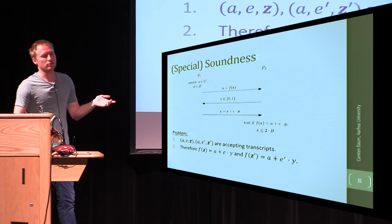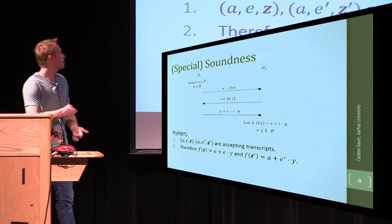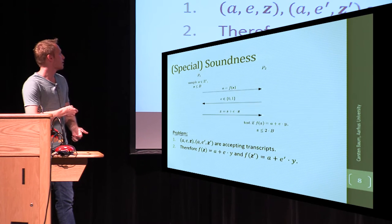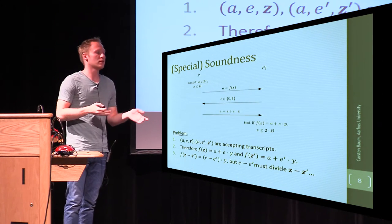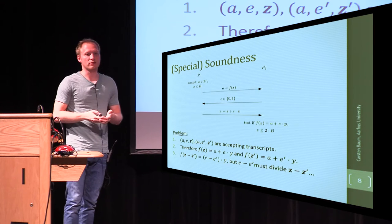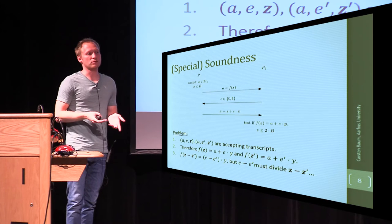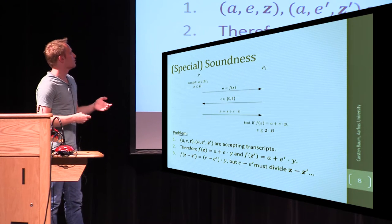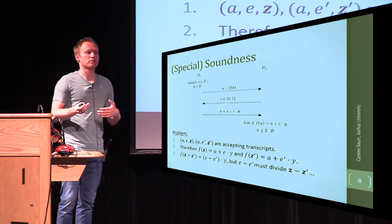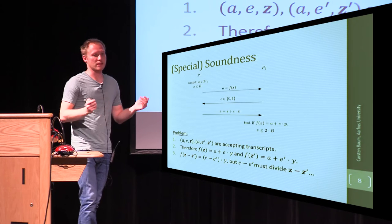then you would normally do this by taking two accepting transcripts with the same auxiliary value and subtracting the equations from each other, which are supposed to hold. But then it's quite immediate that you have to divide by the difference of the challenges over the integers. But if e is 0 or 1, then the difference is 1 or minus 1, right? You can always divide by that. But if you choose e from a larger interval, you may have to divide by 2, 3, 5, which over the integers is not always possible, or in the worst case by 0.